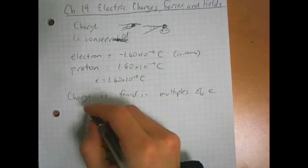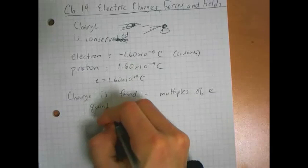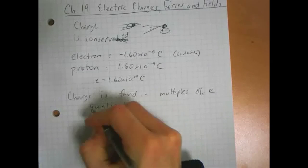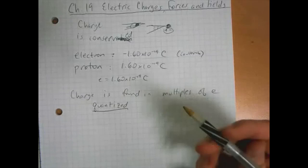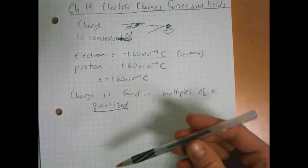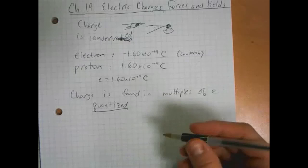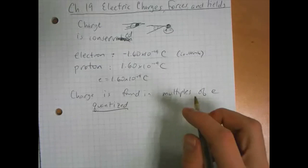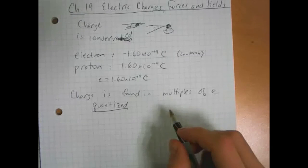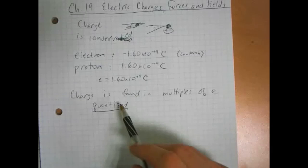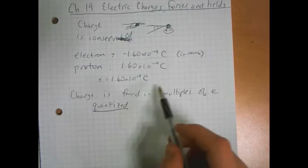The term for that is that charge is quantized, meaning it comes in distinct quantities. There was an experiment done by a guy named Millikan where he showed that charge was quantized. It involved watching charged particles float up and down in oil drops. We had to do that experiment in college, it was very tedious. But charge is always found in multiples of the electron charge.